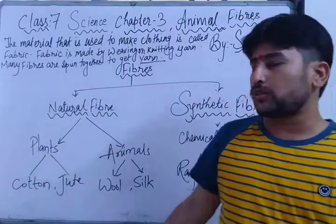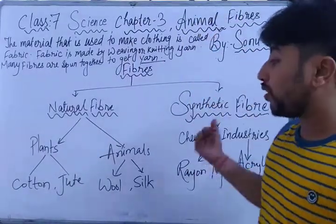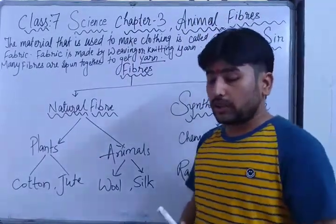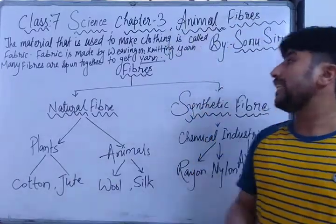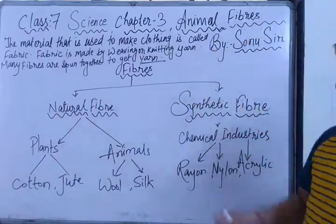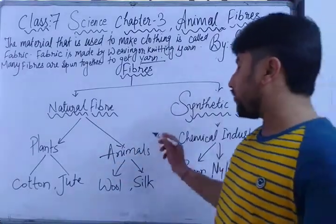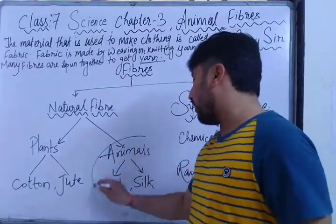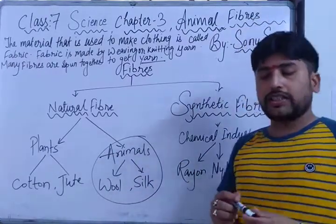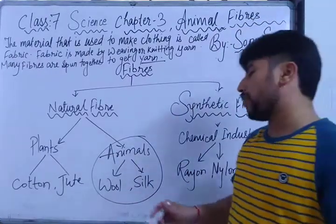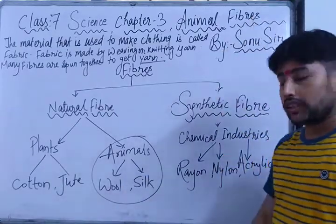There are many synthetic and artificial fibers. In this chapter — Animal Fiber — we are going to study especially about two things: wool and silk. First, we will describe wool, and then we will describe silk.